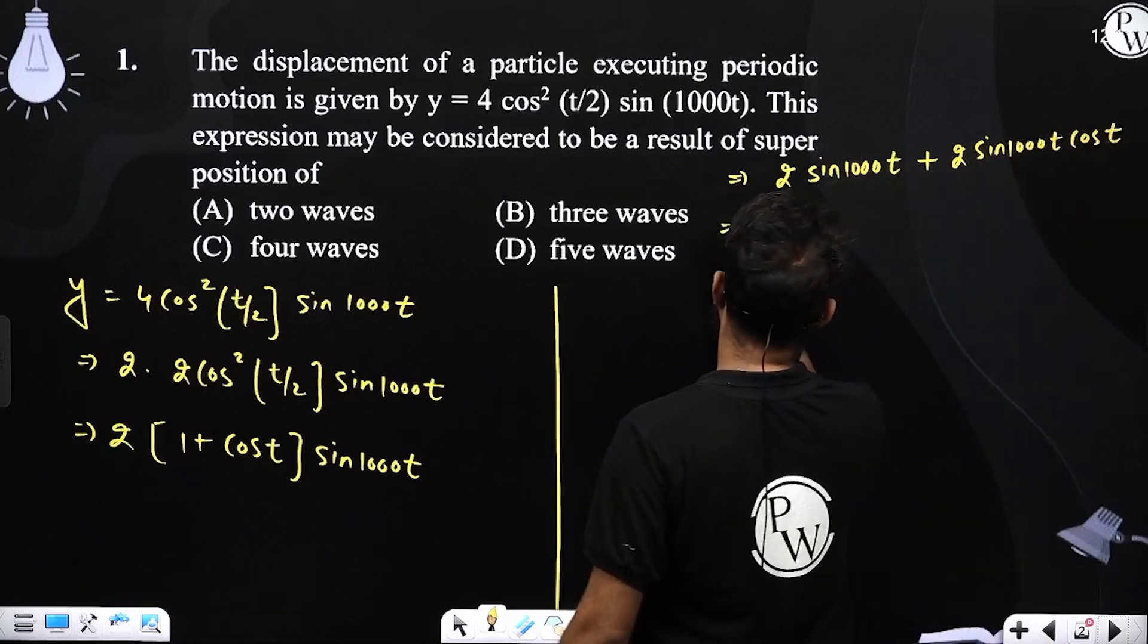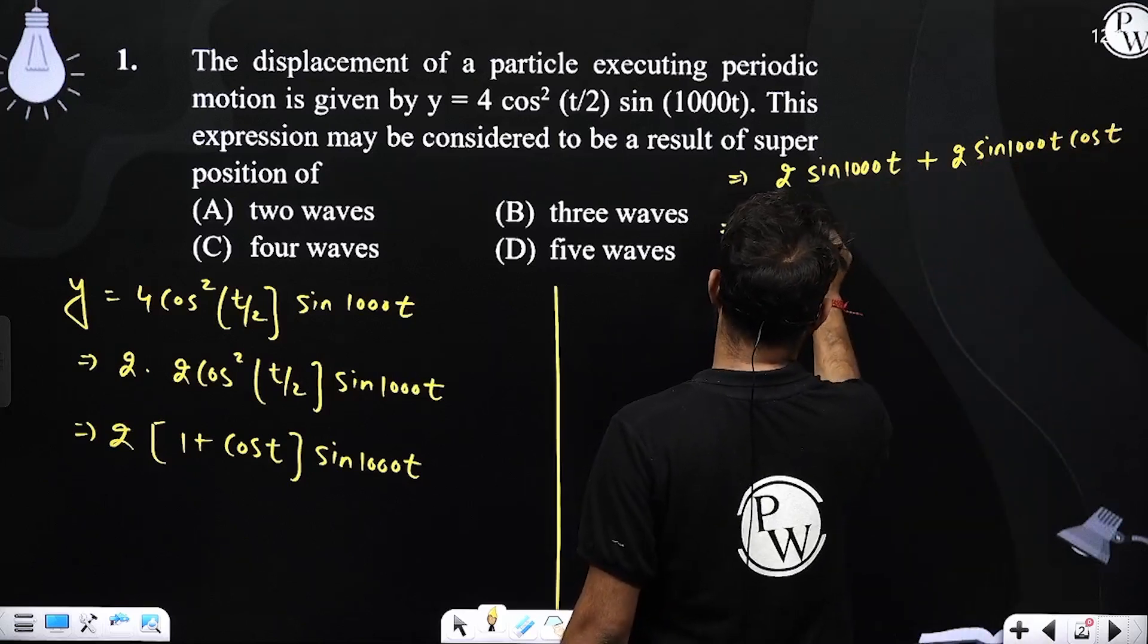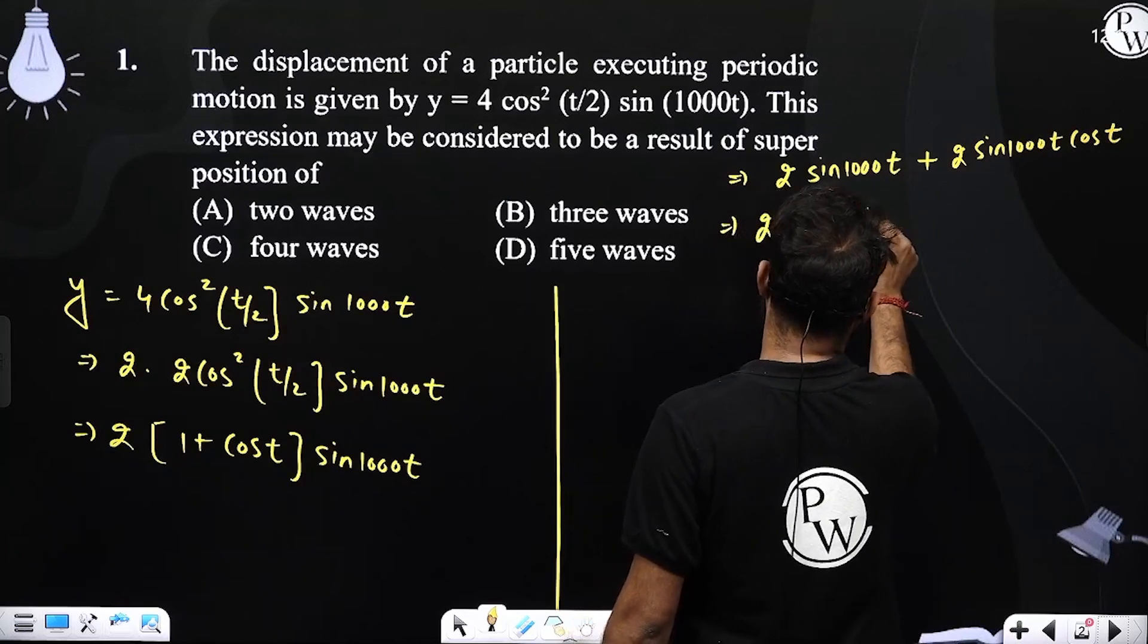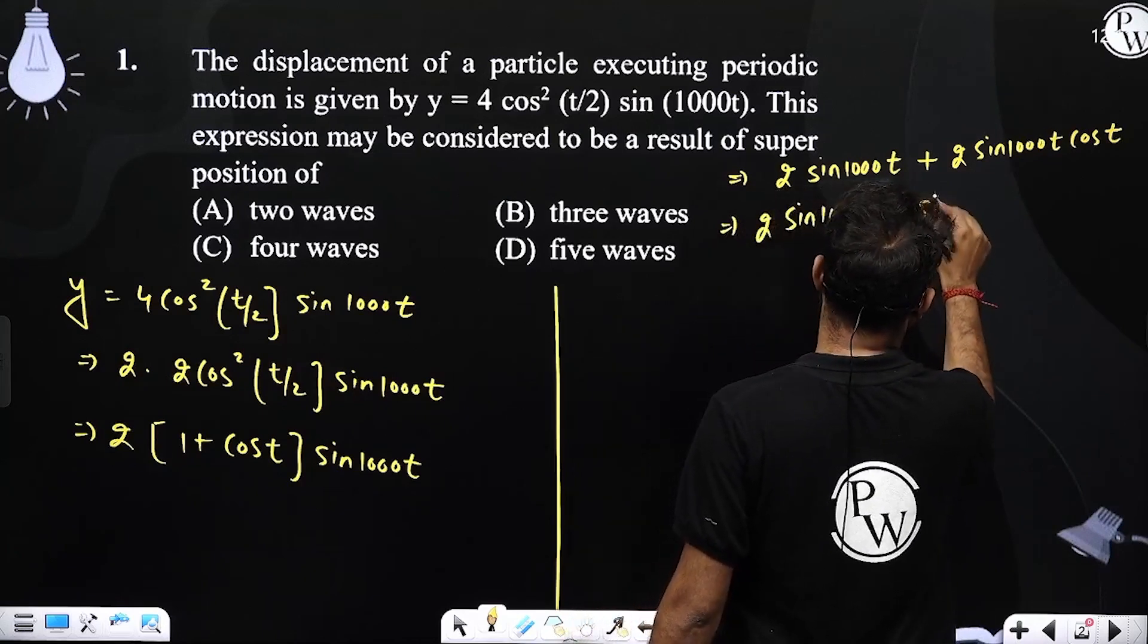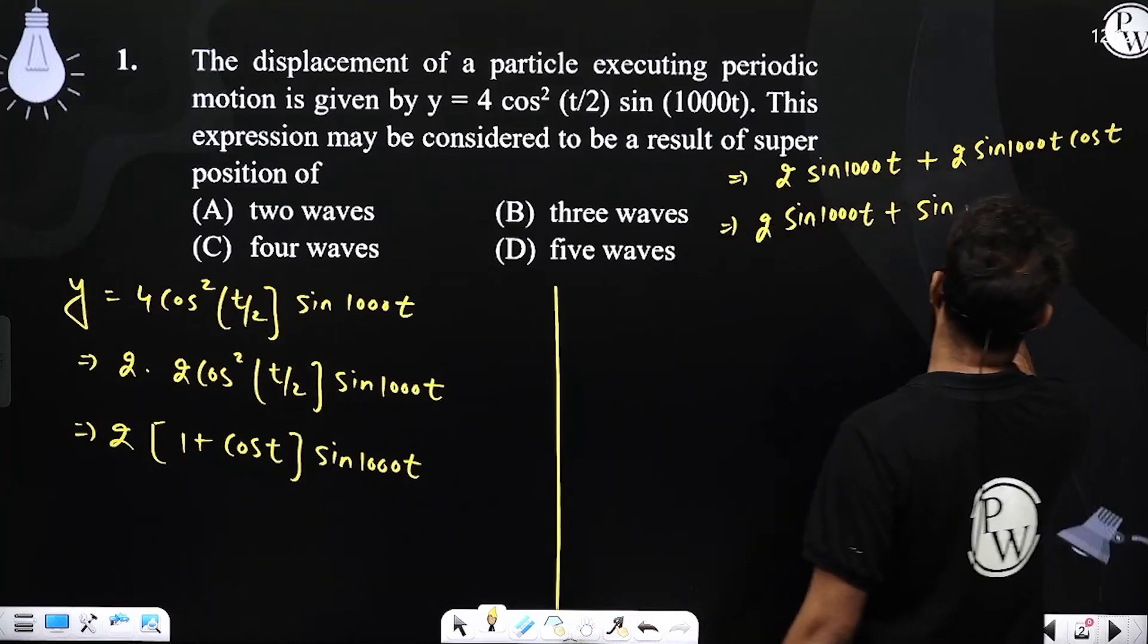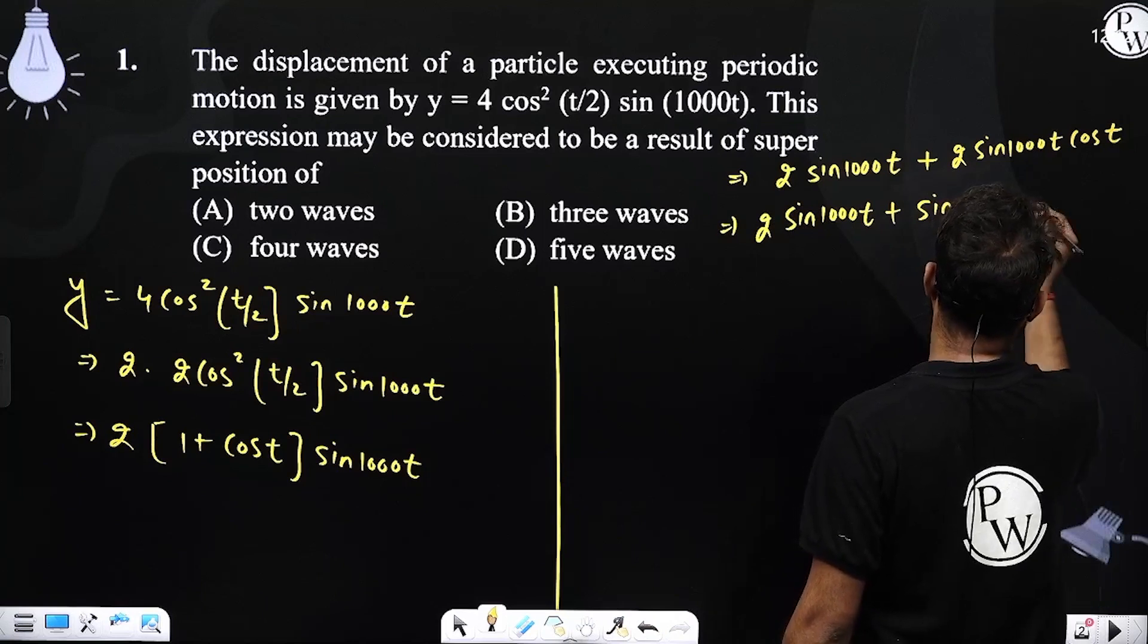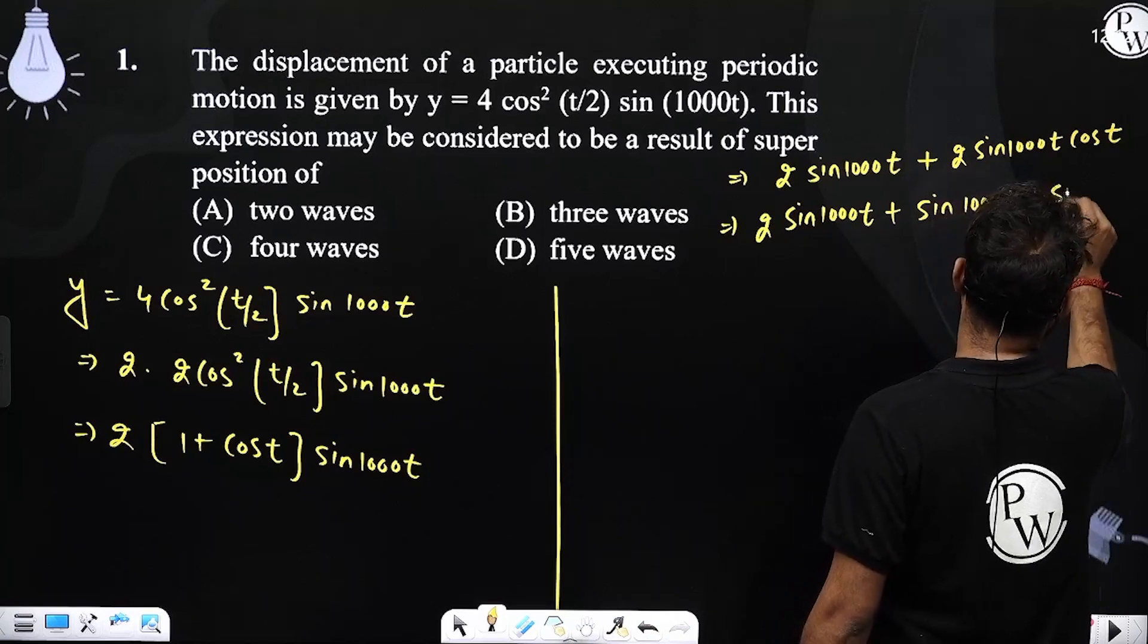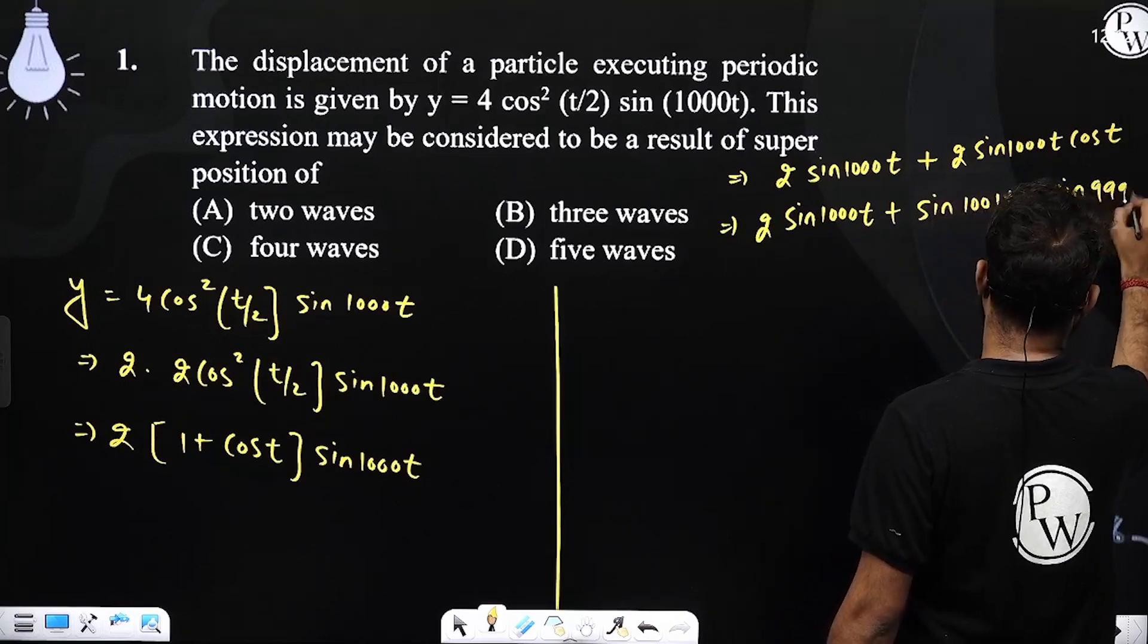Now further we simplify this: 2 sin 1000t plus, using sin a plus b plus sin a minus b formula, we get sin 1001t plus sin 999t. So we have 2 sin 1000t plus these two terms.